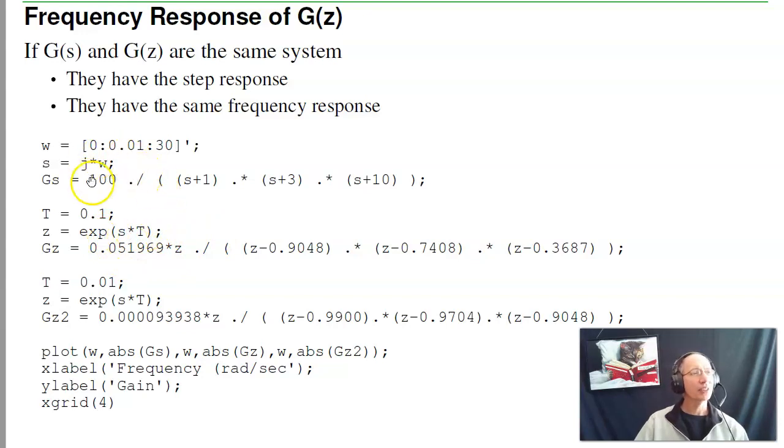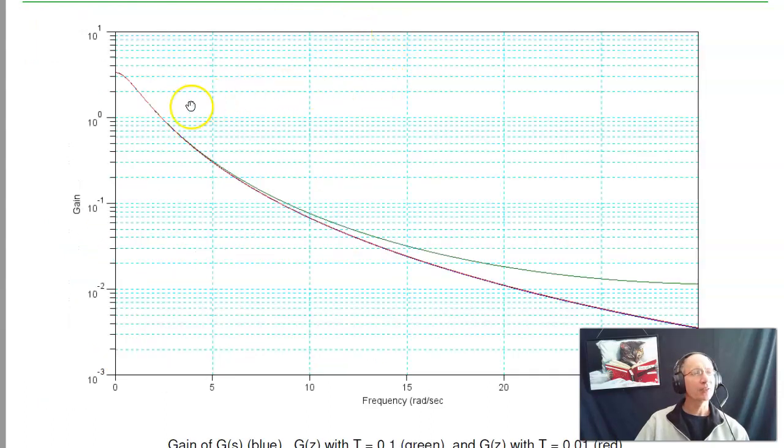To illustrate that, this is G(s), the original system, G(z) with the sampling rate of 0.1 second, G(z) with the sampling rate of 0.01 second. If I plot the gain versus frequency, I can see the blue line is G(s), the red line is G(z) with the sampling rate of 0.01 second, and the green line is G(z) with the sampling rate of 0.01 second. So with the sampling rate of 0.01, it's much more accurate. But basically, the part that you care about up here, where the gain is large, the two are basically the same. Same frequency response means same time response means same system.